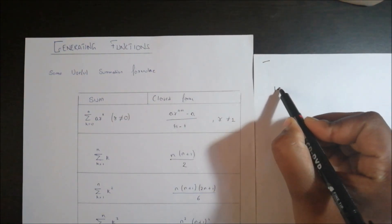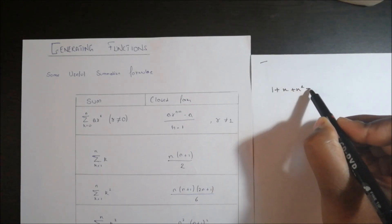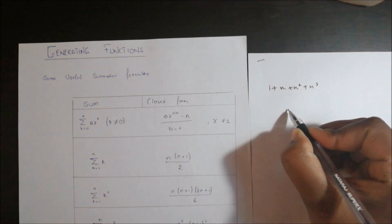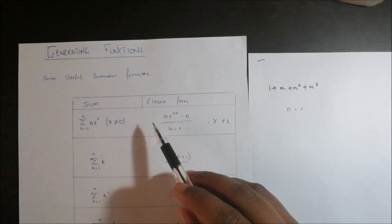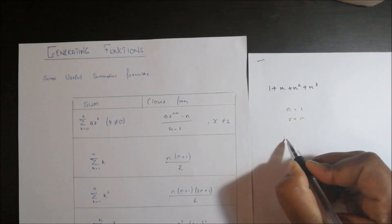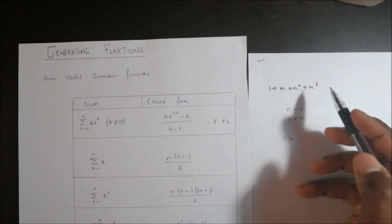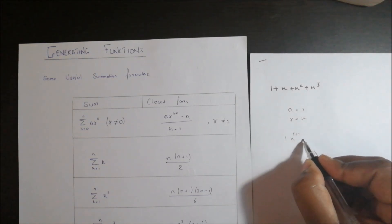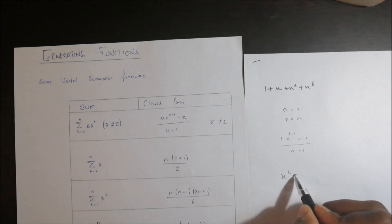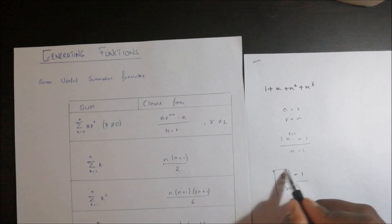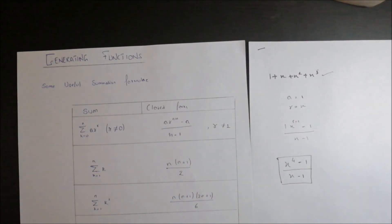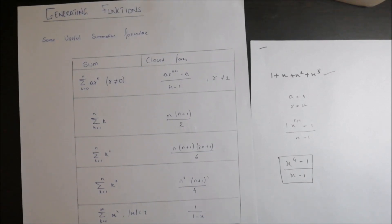Suppose we have a series such as a + x + x² + x³. The closed formula tells us what a will be. Here a is 1, and r is x. So the closed formula is 1·x^(3+1) minus 1, upon x minus 1, which is x^4 minus 1 upon x minus 1. This is the closed formula for this series.